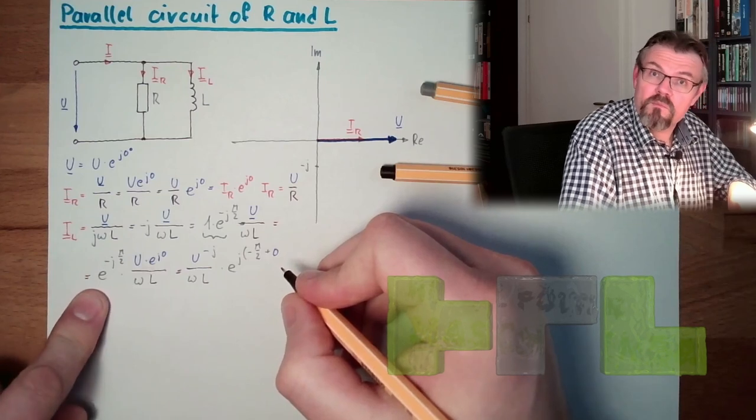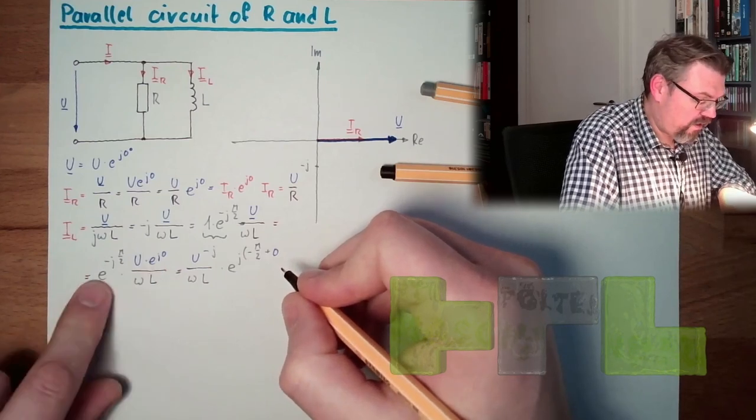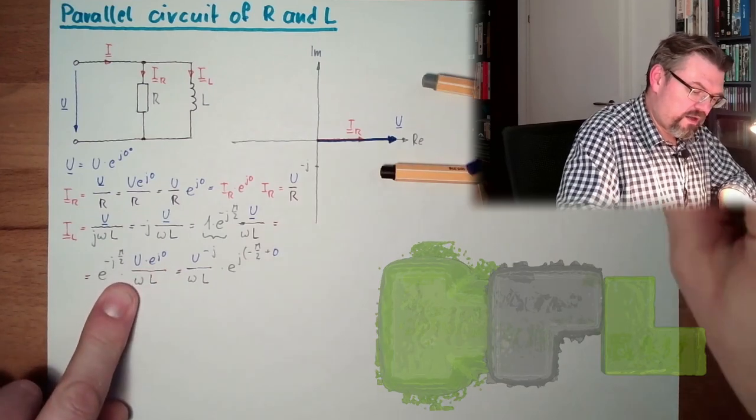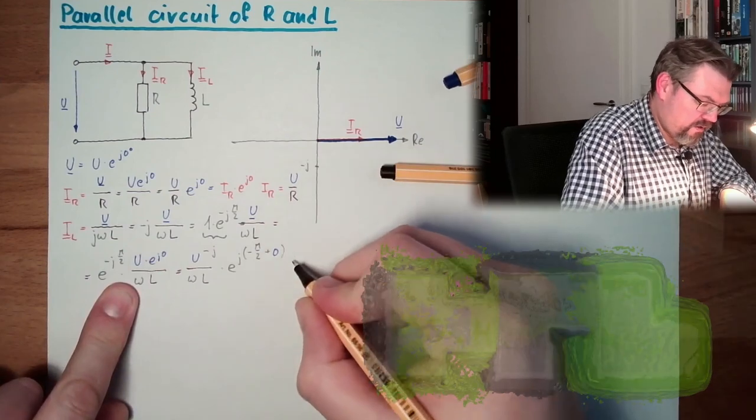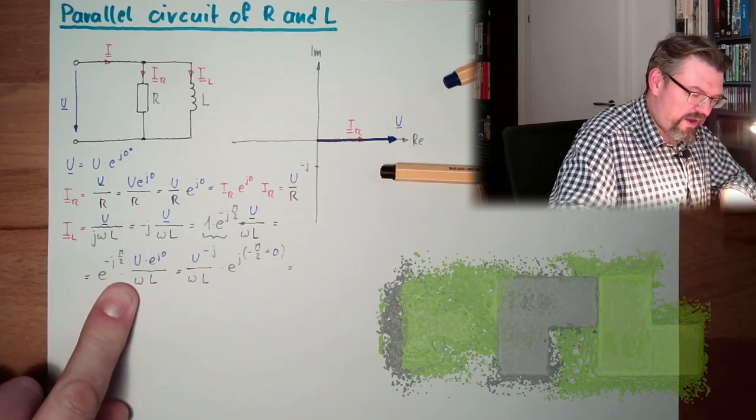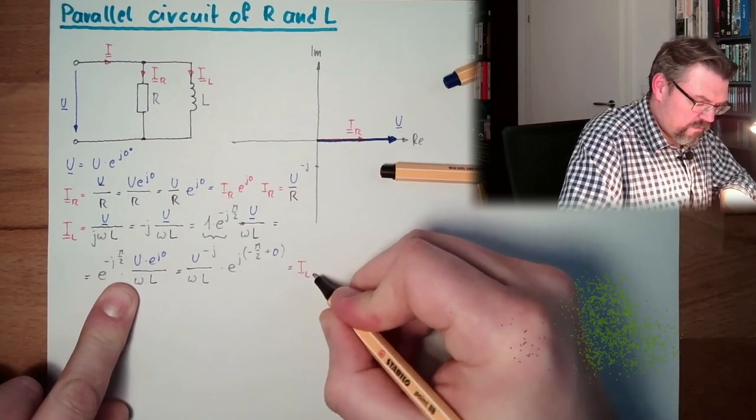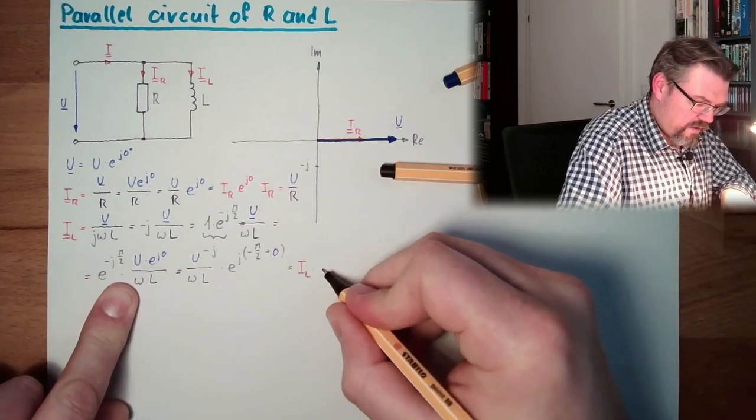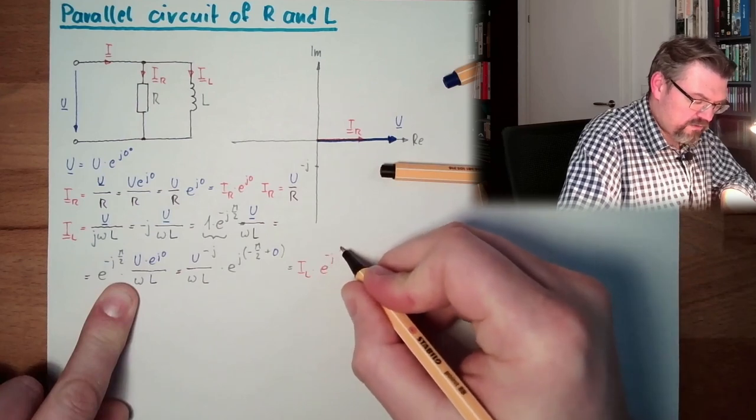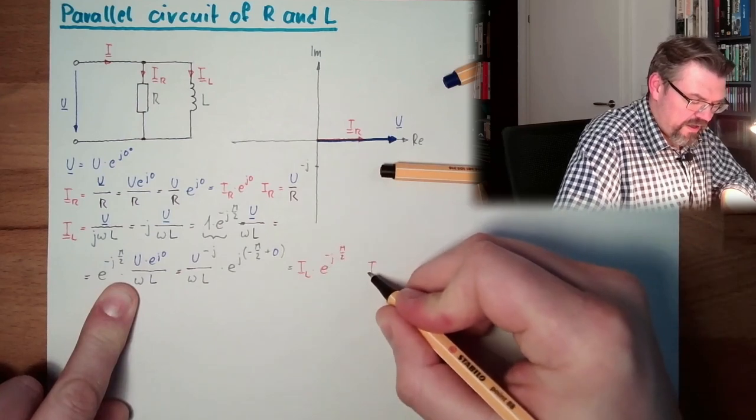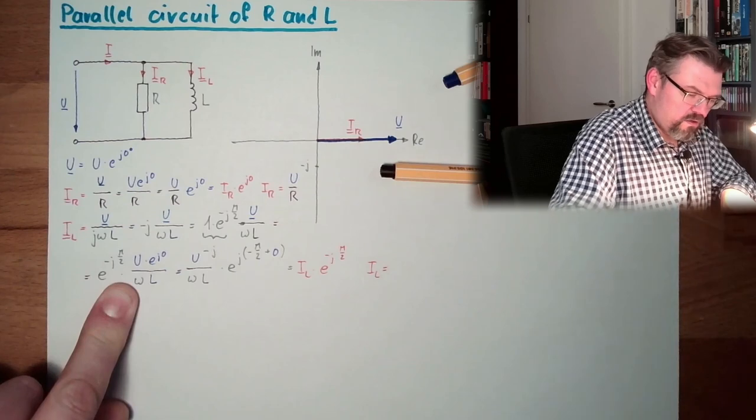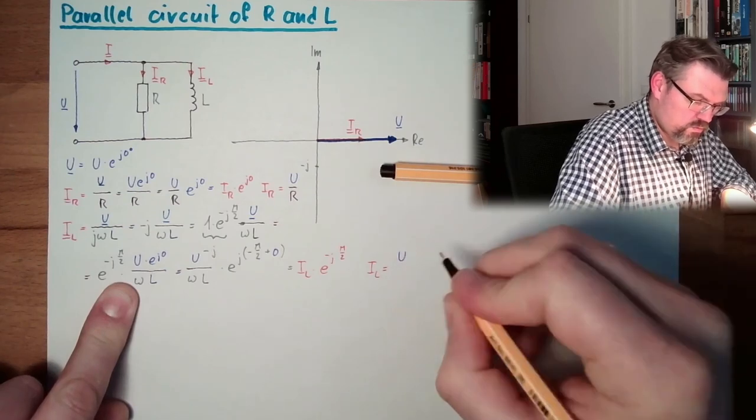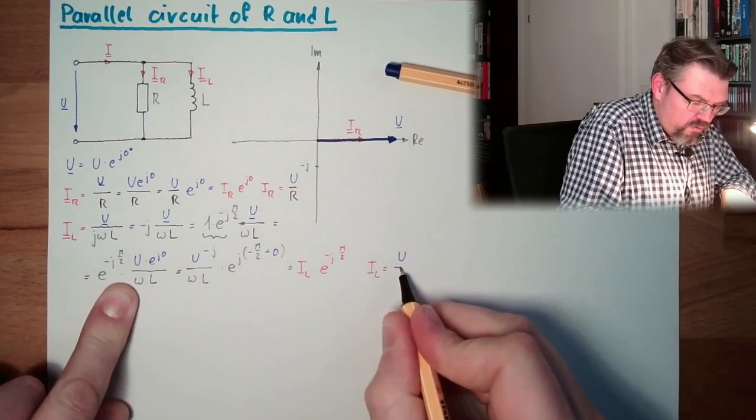I only have to multiply those two, so we are ending up with U divided by omega L multiplied by e to the j minus pi half plus zero. I have to summarize those two. Because if I make the product of a power, then I have to add the power.